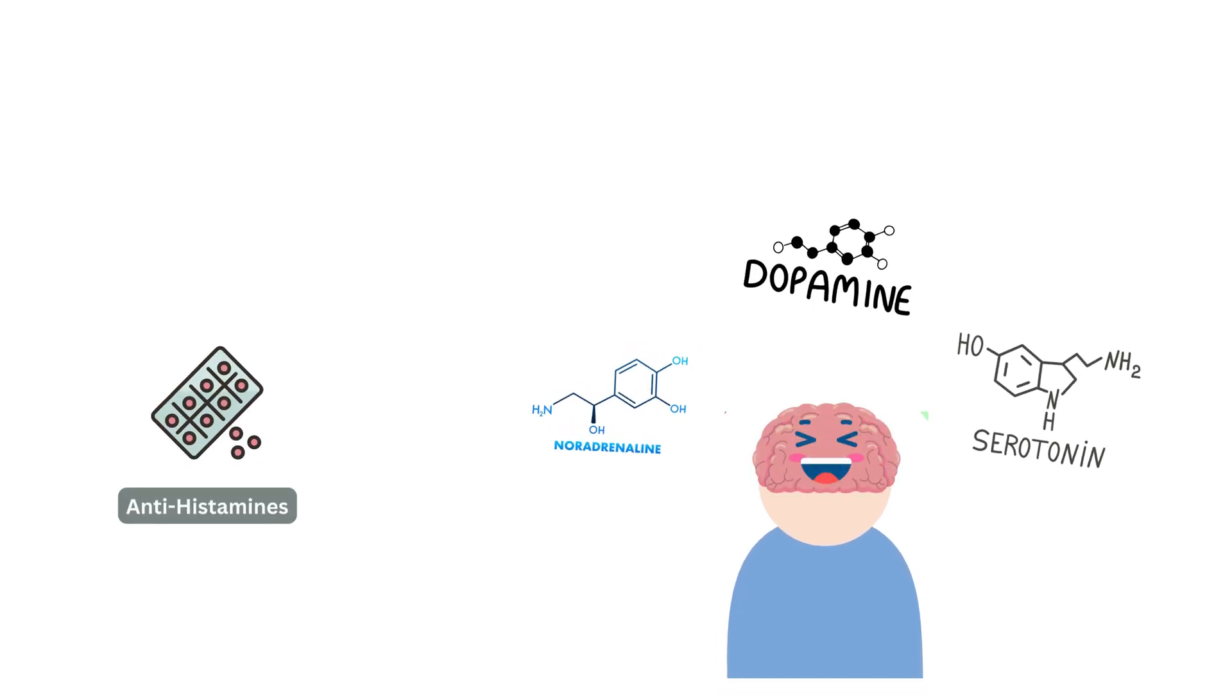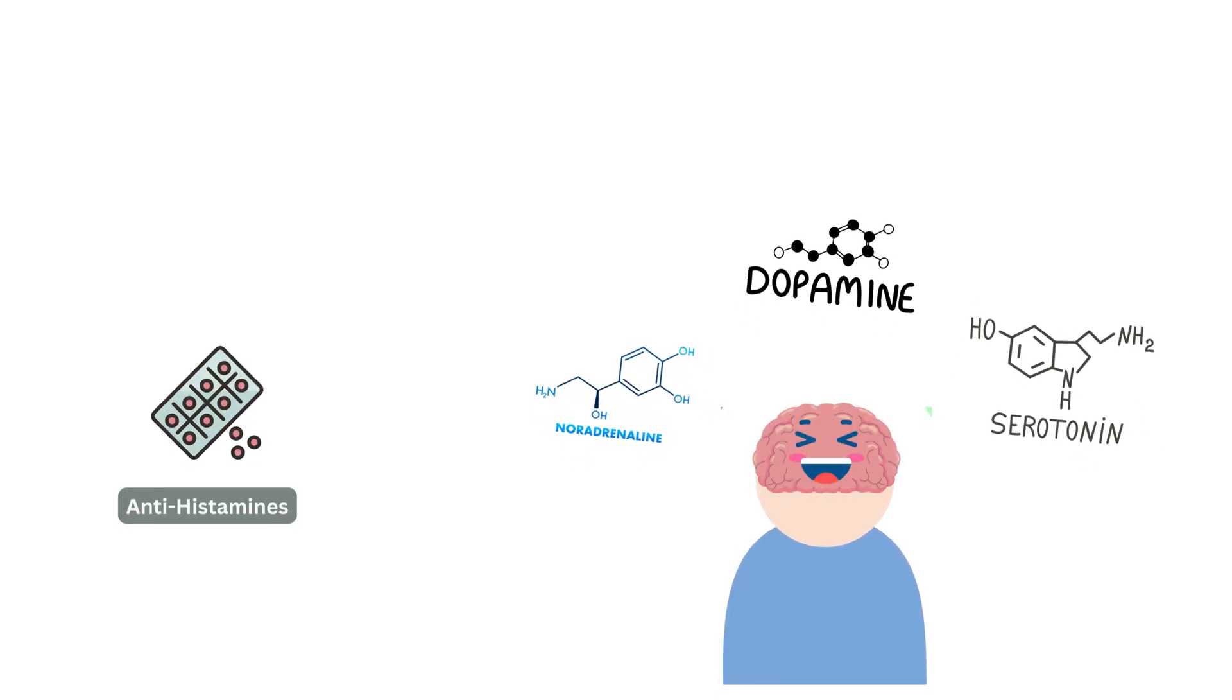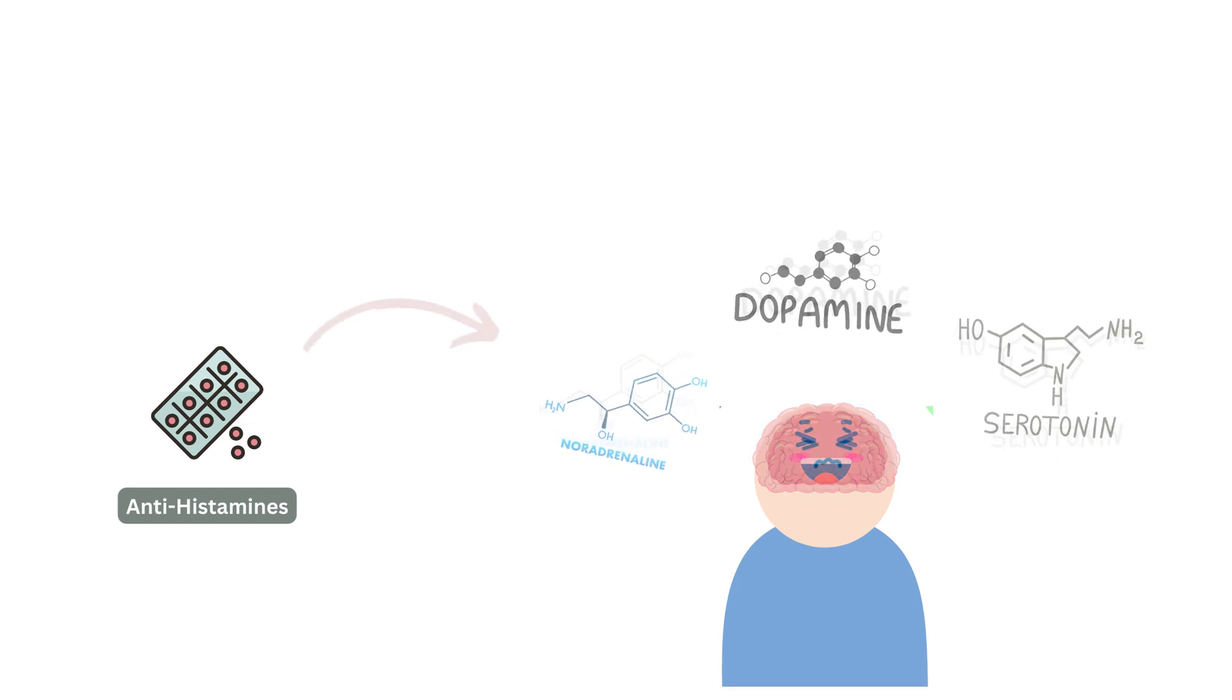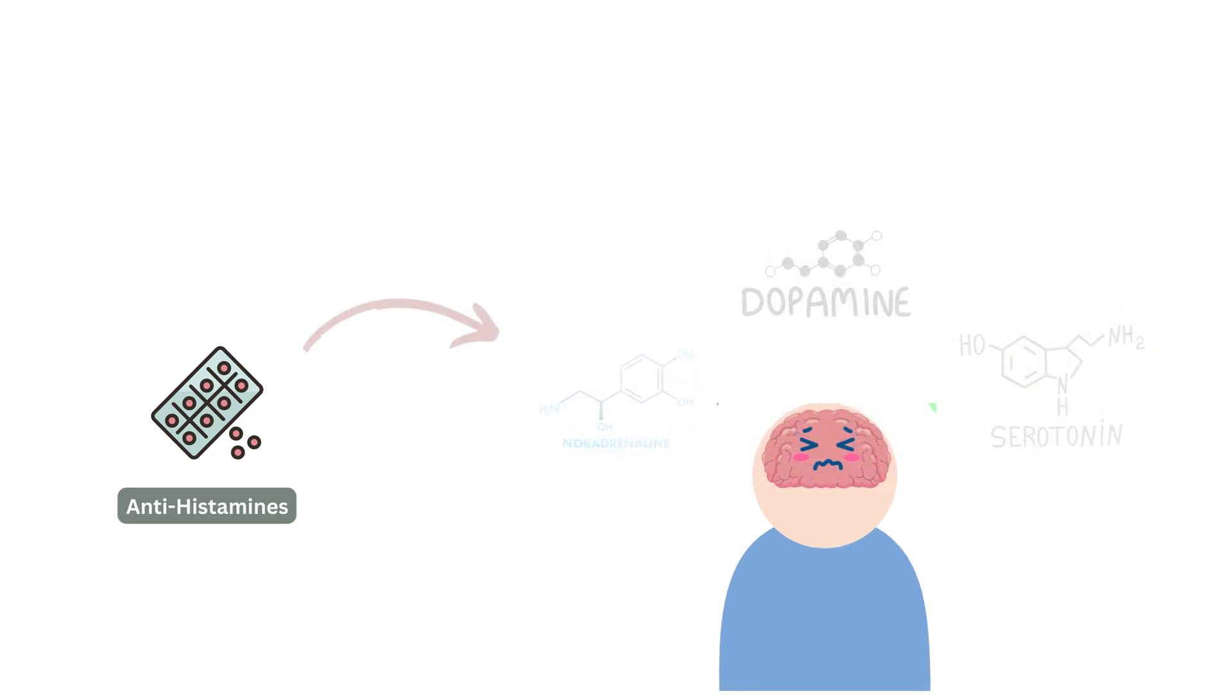Now, certain medications, like antihistamines, work by calming these messengers down. They do this by blocking certain receptors that these messengers use to communicate. It's like putting a lid on a pot to stop it from boiling over. As a result, you start feeling drowsy, your mind becomes quieter, and you may even drift off to sleep.